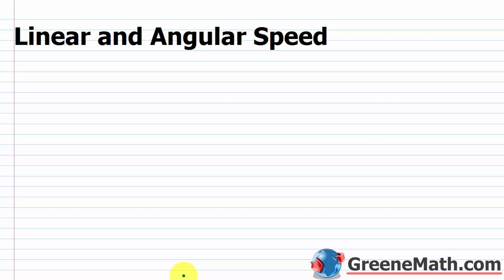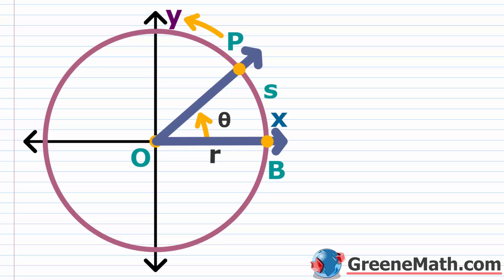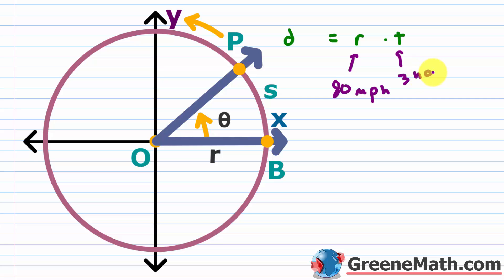In this lesson we want to talk about linear and angular speed. Previously we talked about how to solve motion word problems using our distance formula: d equals r times t, where d is distance, r is the rate of speed, and t is the amount of time traveled. For example, if we're moving at 80 miles per hour for three hours, we travel 80 times 3, or 240 miles.